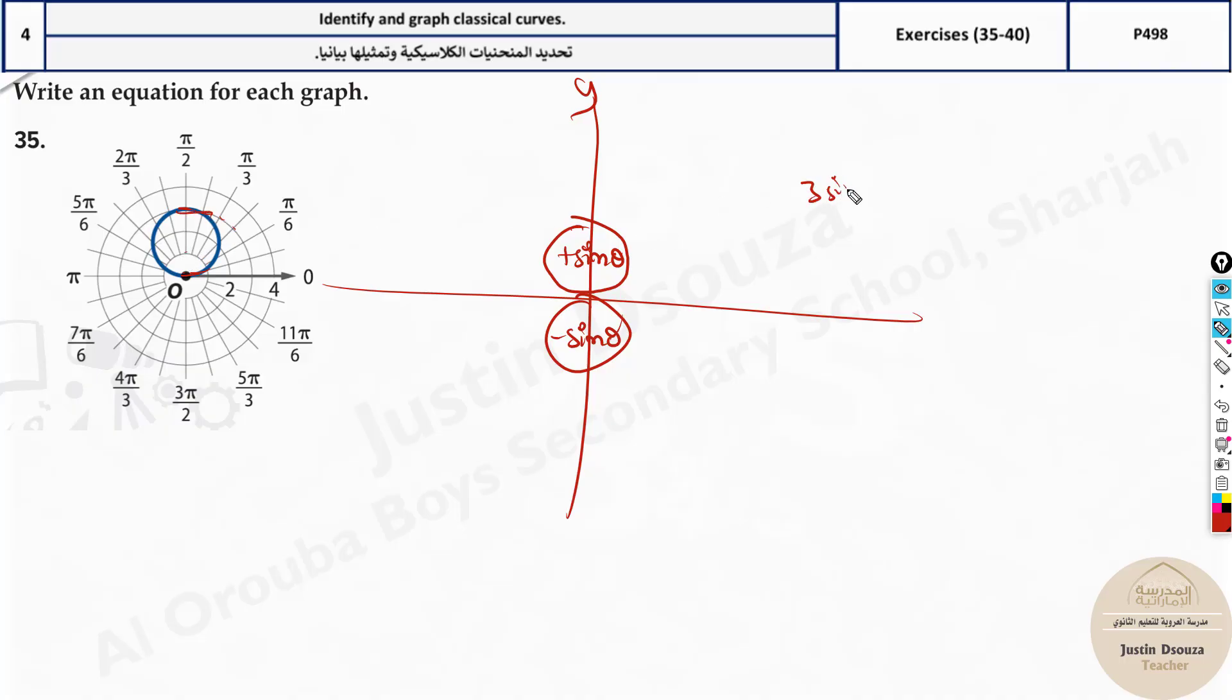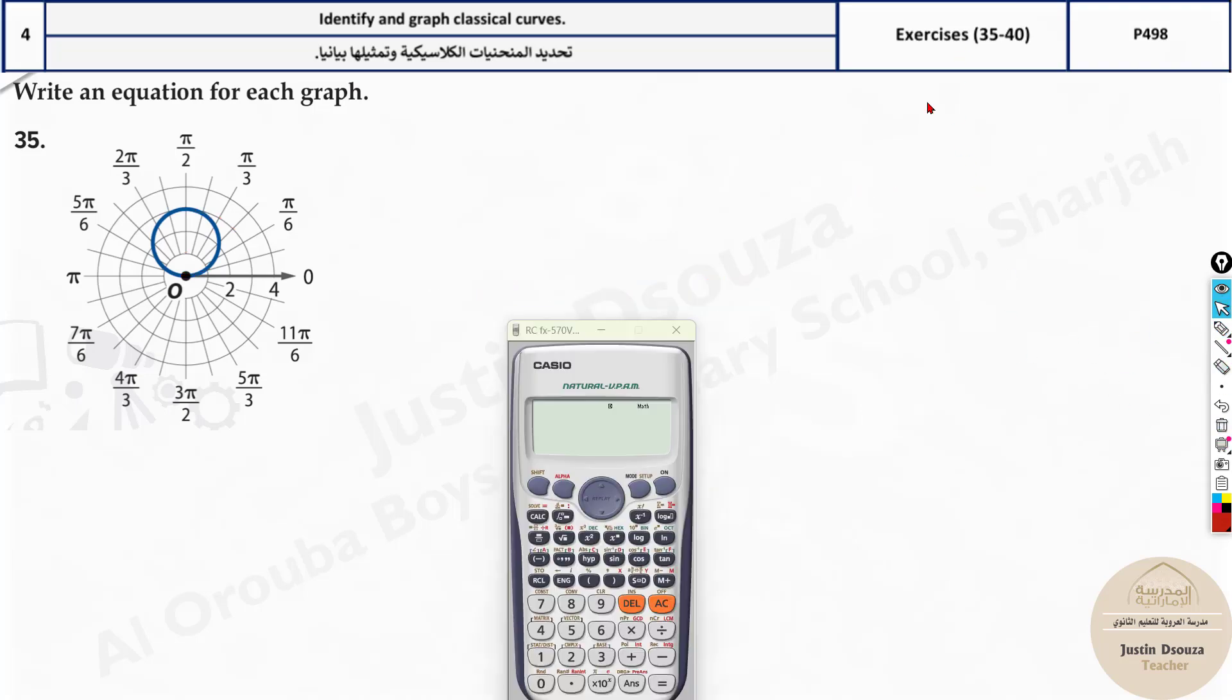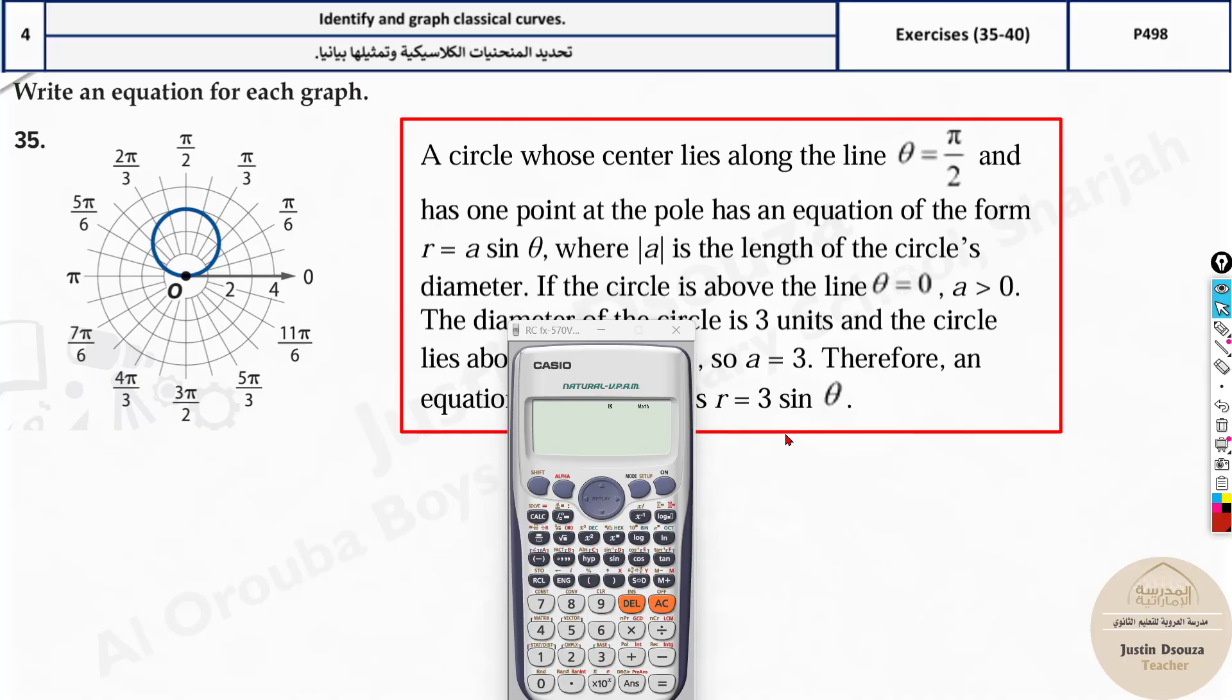Depending on the diameter, this is how much? 1, 2, 3 - 3 means it will be 3 sine theta. So if it is along the x-axis, then that is called cosine. That is one important thing you must remember. I will tell you the calculator method.